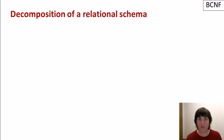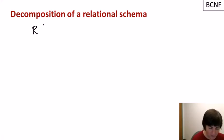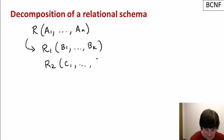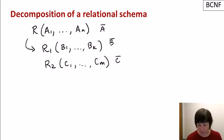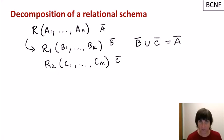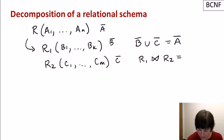Let's start by defining decomposition of a relational schema. Suppose we have a relation R with attributes A1 through AN. We can decompose R into two relations R1 and R2, with attribute sets B and C respectively. R1 and R2 are a decomposition of R if: B union C equals A, covering all attributes, and furthermore R1 natural join R2 equals R.